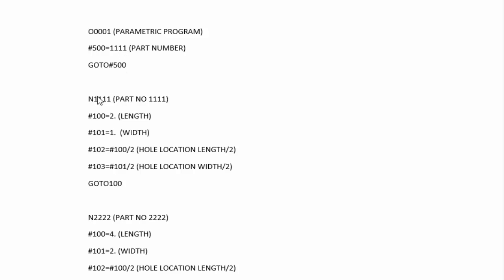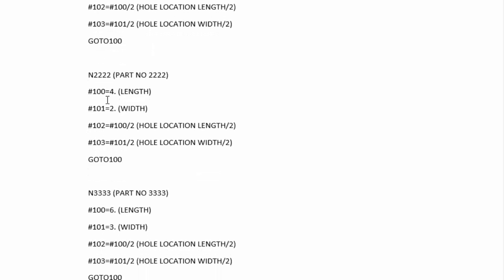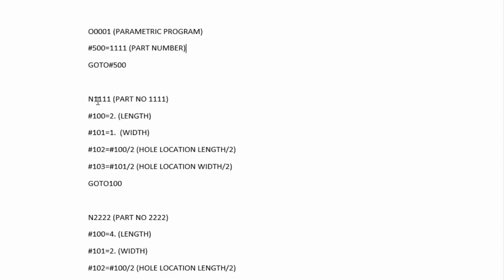If variable #500 were loaded with 2222, the GOTO #500 statement would look for N2222. It skips over other code, stops at N2222, reads in those variables, then jumps again to N100. At N100 it looks for the first operation, starting with sequence number 100 for tool number 1. Right below N1111 we list the variables we assigned to the different dimensions of the part.